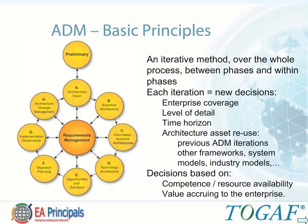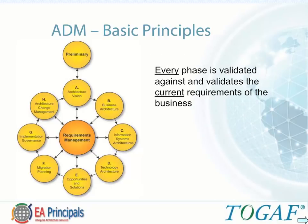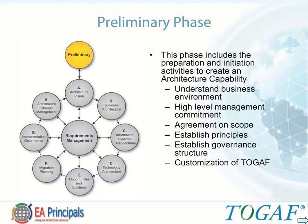The ADM is iterative and circular. Every phase of the ADM is validated against and validates the current requirements of the business — requirements management is central to the process. The preliminary phase of the ADM includes preparation and initiation activities to create an architecture capability. During the preliminary phase, an understanding of the business environment must be developed, high-level management commitment must be secured, scope must be agreed, architectural principles established, a governance structure established, and any customizations to TOGAF defined.